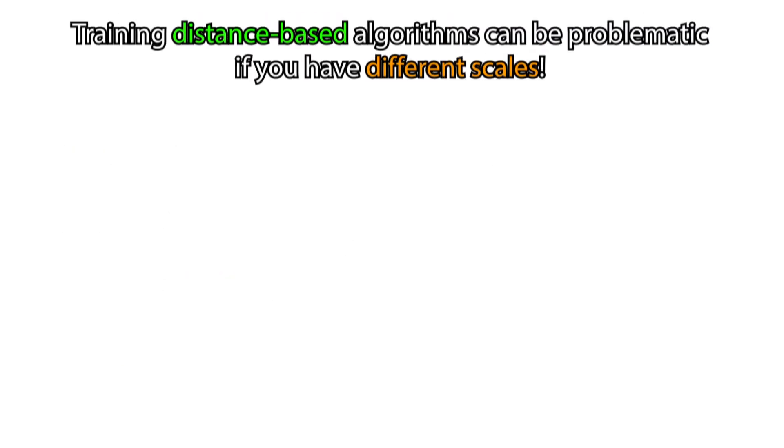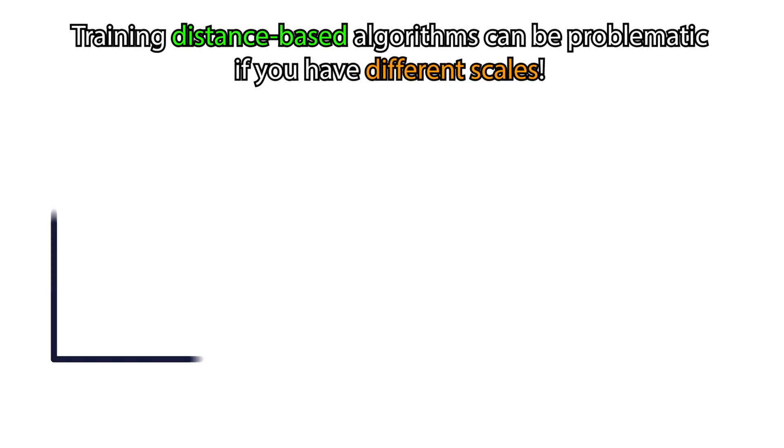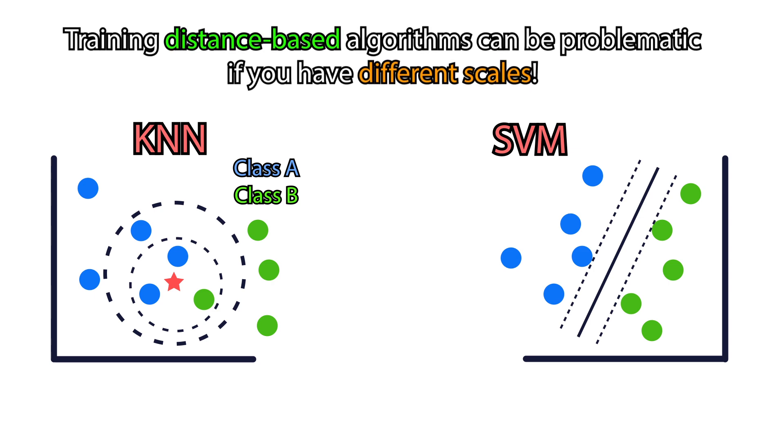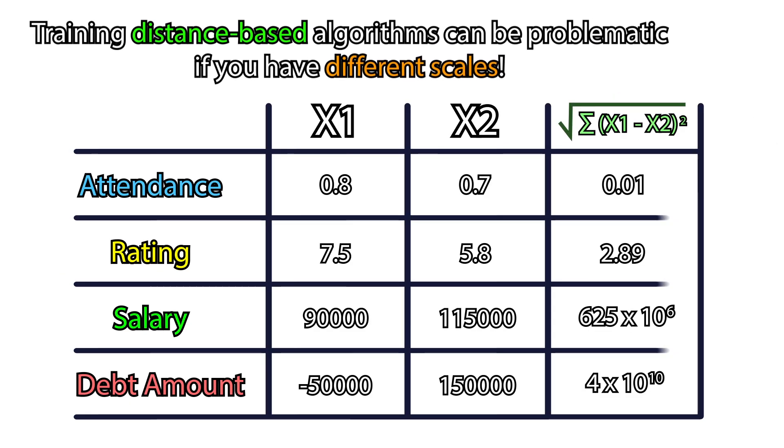If you decide to train a machine learning model that relies on distance calculations, like k nearest neighbors or support vector machines, the features having larger scales will dominate the calculations.